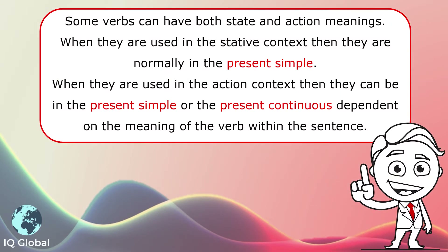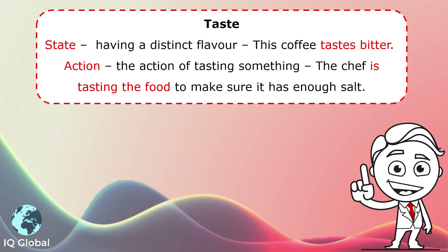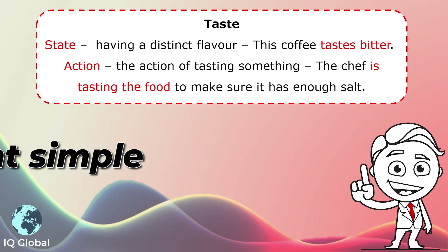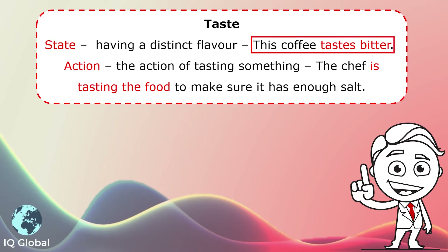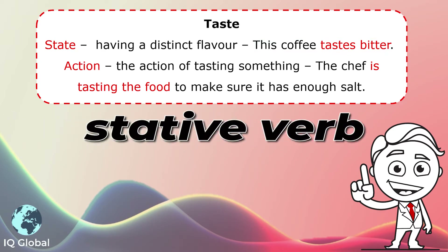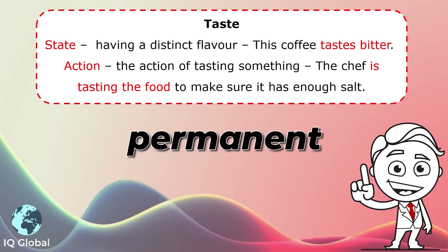Some verbs can have both state and action meanings. When they're used in the stative context, they're normally in the present simple. When they're used in the action context, they can be in the present simple or the present continuous, dependent on the meaning of the verb within the sentence. Let's look at an example — the verb 'taste.' To express a state with a distinct flavour, the sentence is: this coffee tastes bitter. The stative verb is 'tastes' and the description is 'bitter.' This is the state — it is permanent, this is always bitter.